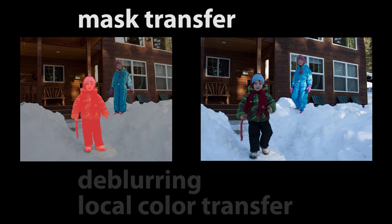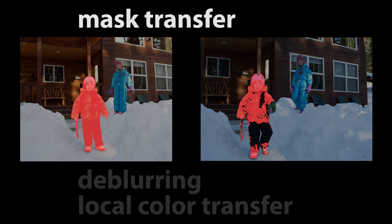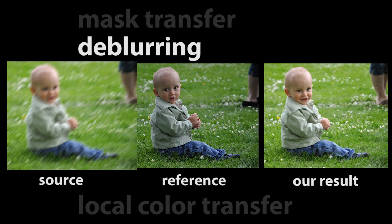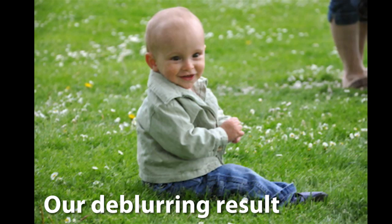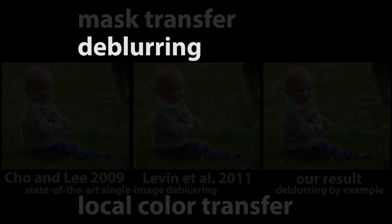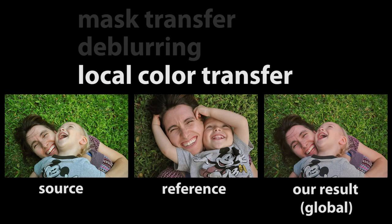The robust, dense correspondence that we recover between images can be used for additional operations requiring image correspondence, such as mask transfer, de-blurring, and local color transfer. For example, if we have a hand-drawn mask for one image, we can use our correspondences to transfer known regions of the mask into the other image, and use grab-cut to solve for regions with unknown correspondence. If we have both a blurry image and a sharp image of a similar scene, we can use the correspondences between them to compute a blur kernel and deconvolve the blurry image. Or, we can further refine our global color model by using the recovered correspondences to compute local color transformations for different regions in the image.